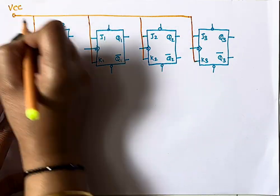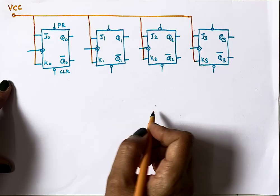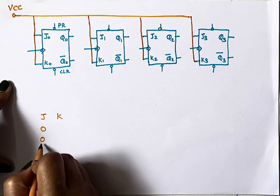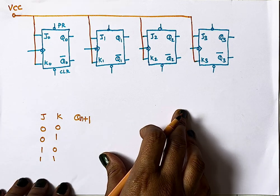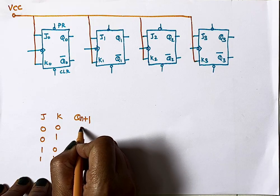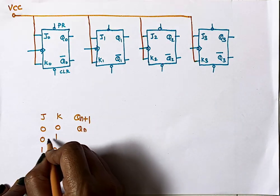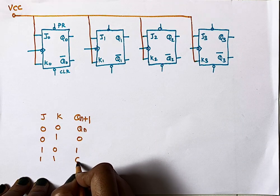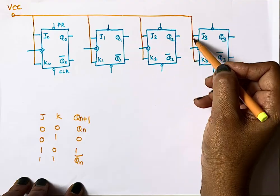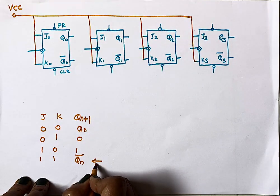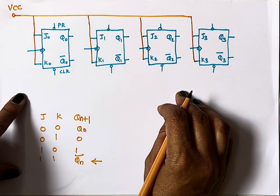J and K are connected to VCC. Reviewing the JK flip-flop truth table: when J=0, K=0, the next state equals the present state; J=0, K=1 gives 0; J=1, K=0 gives 1; and J=1, K=1 gives the complement of the present state. Since all flip-flops have J and K continuously connected to VCC, the counter works in toggle mode — the next state is always the complement of the present state when a clock pulse arrives.